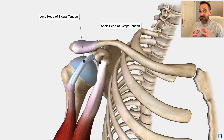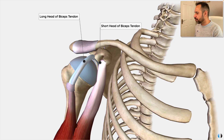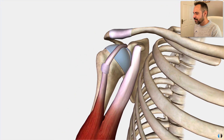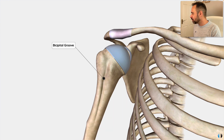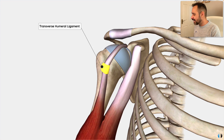The long head actually runs into the intraarticular capsule of the shoulder — that is, it runs inside the capsule — which also makes it more prone to pathology. Looking at this long head tendon, it runs through the bicipital groove, which is a little indentation in the proximal humerus, and it's kept in place by the transverse humeral ligament.